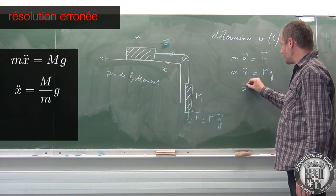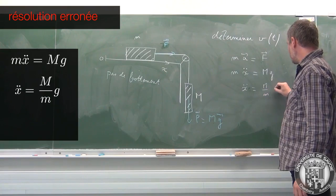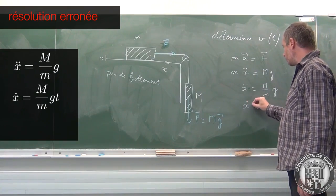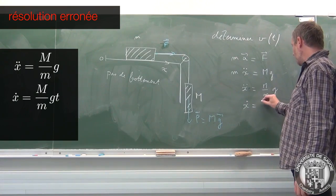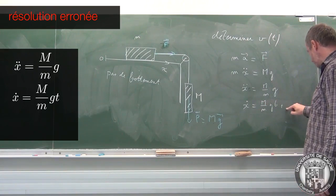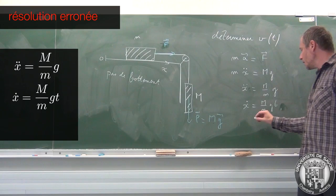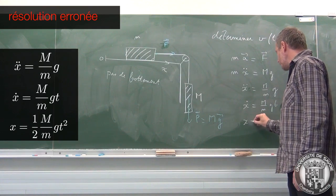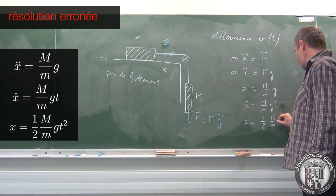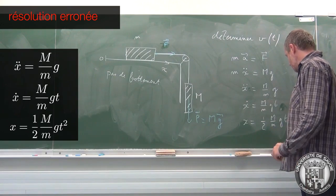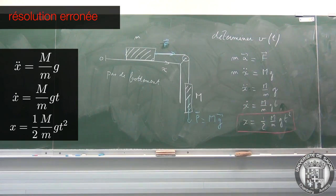Ce qui permet d'écrire que ẍ = (m/M)g. On intègre une fois: si le corps au temps initial n'a pas de vitesse initiale, on se retrouve avec ẋ = (m/M)gt. J'ai décidé d'aller un peu plus loin et de m'intéresser aussi à la position. Et j'intègre encore une fois, et on trouve x = (1/2)(m/M)gt². Voilà l'expression de la position qu'on trouverait en fonction du temps. Donc ça, c'est pas correct.